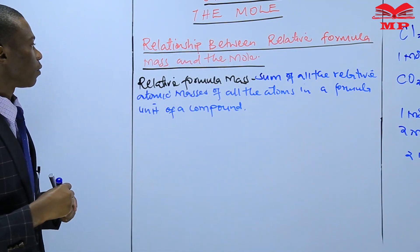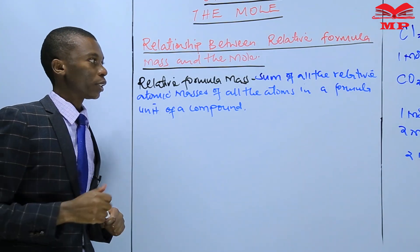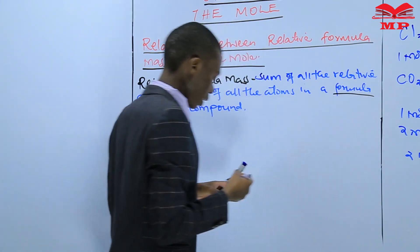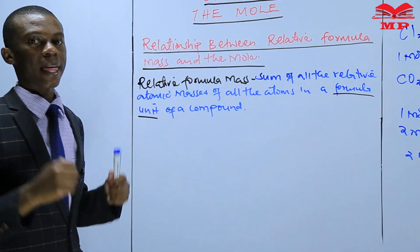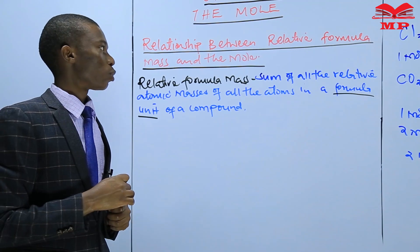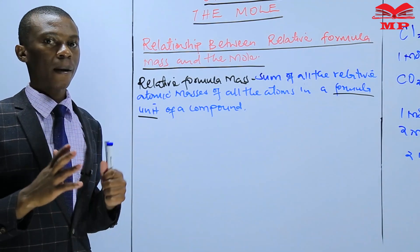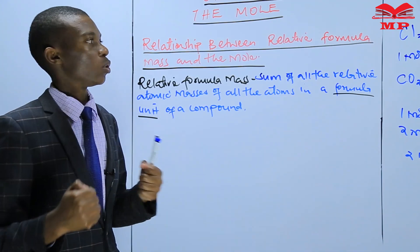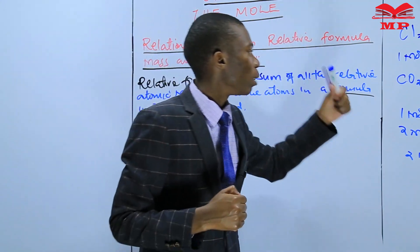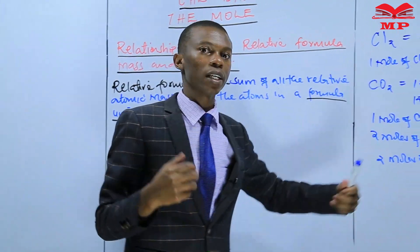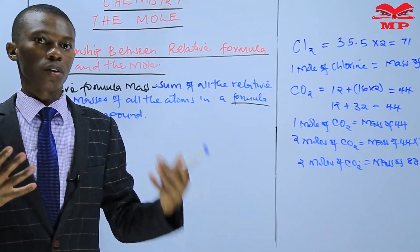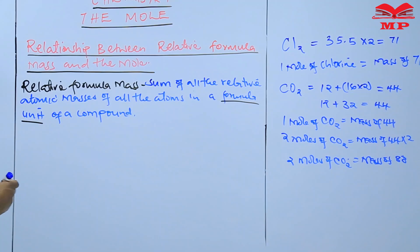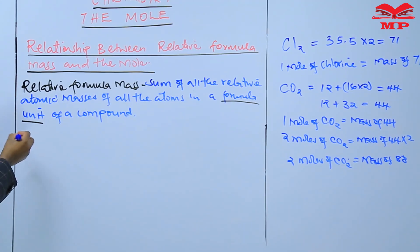The relative formula mass is the sum of all the relative atomic masses of all the atoms in a formula unit. We are talking about a compound, because these are not molecules. Remember, relative molecular mass applies to molecules of gases — carbon dioxide, chlorine, oxygen — those are molecules. Now I want us to do some examples.